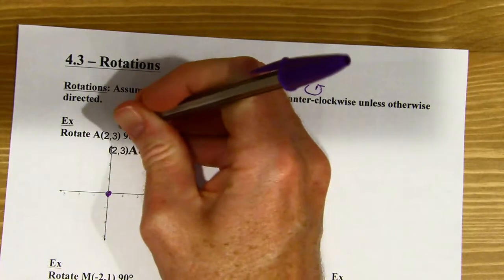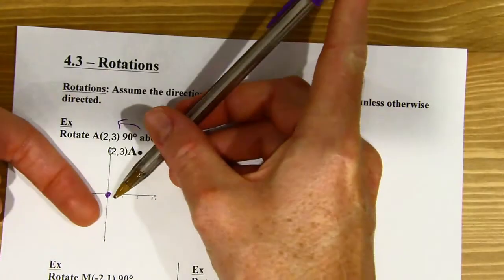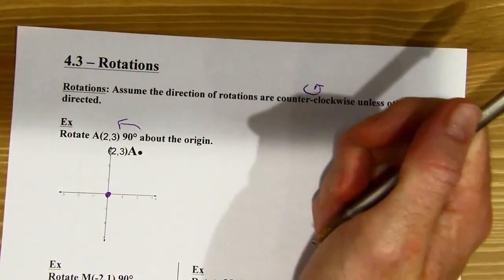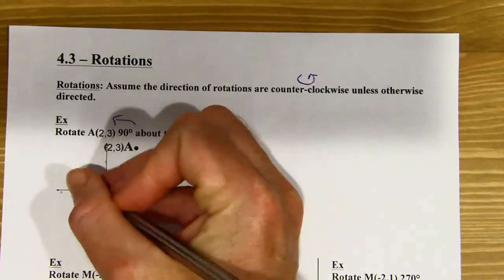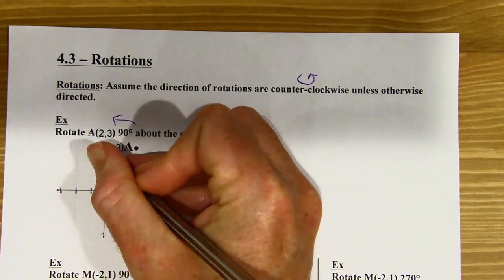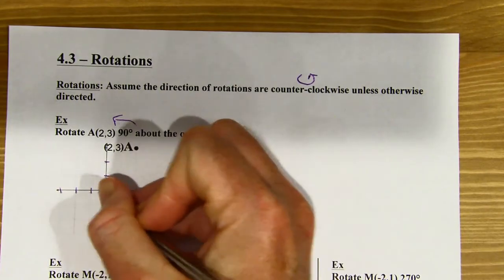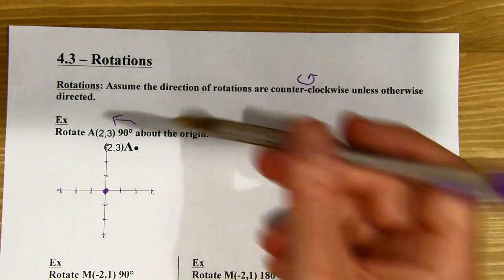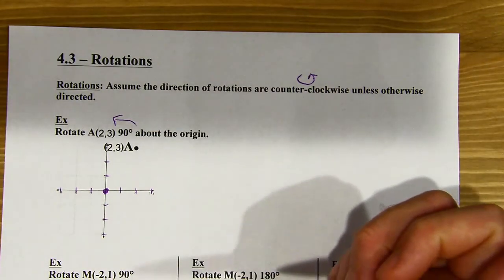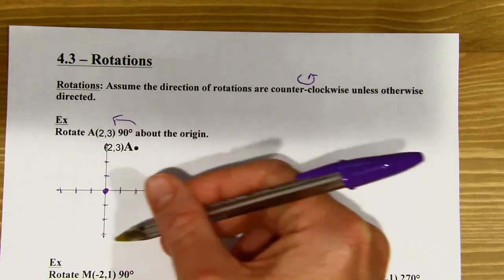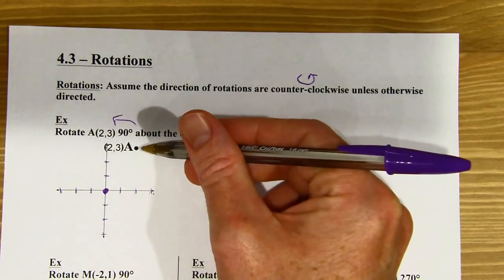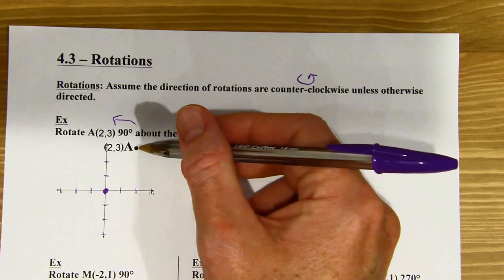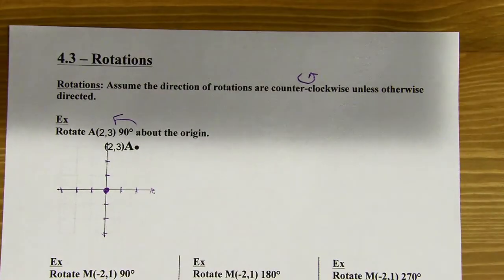Point A is going to go in that direction. You could measure out a 90-degree angle and figure it out that way, but you don't have to when we're on an xy-axis. The problems you'll get mostly are going to be multiples of 90 degrees — 90, 180, or 270. If you think about 360 degrees as a full spin, 90 is one quarter of 360, so it's a quarter spin around.